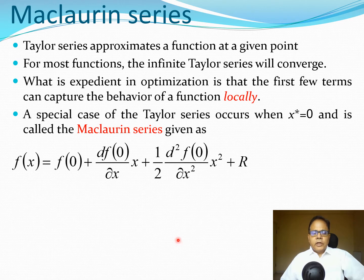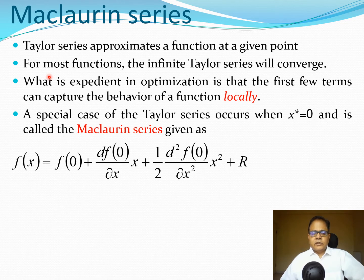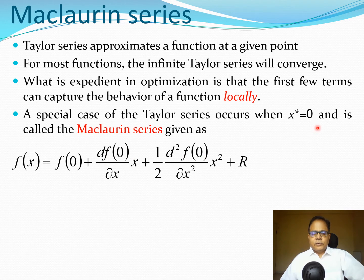Taylor series finds an approximate polynomial function for a given non-linear function around a given point. For most functions, if you take an infinite number of terms you will converge. But for optimization purposes, the first few terms — typically the first two — can capture the behavior of a function locally. A special case occurs when x* = 0, known as the Maclaurin series.